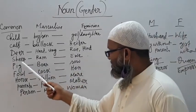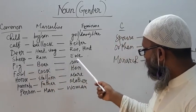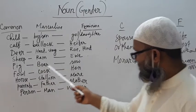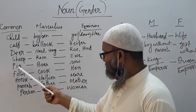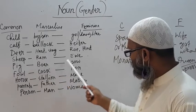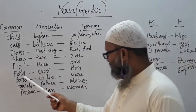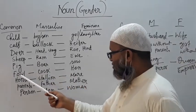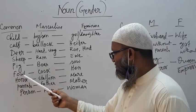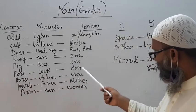In this way, 'sheep' — its masculine is ram, and its feminine is ewe. And then 'pig' — its masculine is boar, and feminine is sow. And 'fowl' — it is also known to us; fowl's masculine is cock and feminine is hen.